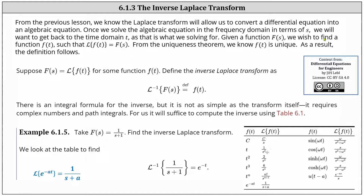Given a function F(s), we wish to find a function f(t) such that the Laplace transform of f(t) equals F(s). From the uniqueness theorem, we know f(t) is unique. As a result, the definition follows: suppose F(s) is equal to the Laplace transform of f(t) for some function f(t). We define the inverse Laplace transform as the inverse Laplace transform of F(s) equals f(t). There is an integral formula for the inverse Laplace transform, but it is not as simple as the Laplace transform itself — it requires complex numbers and path integrals. For us, it will suffice to compute the inverse Laplace transform using table 6.1 below.